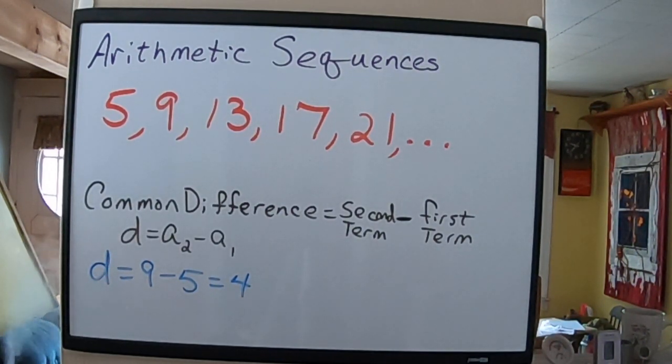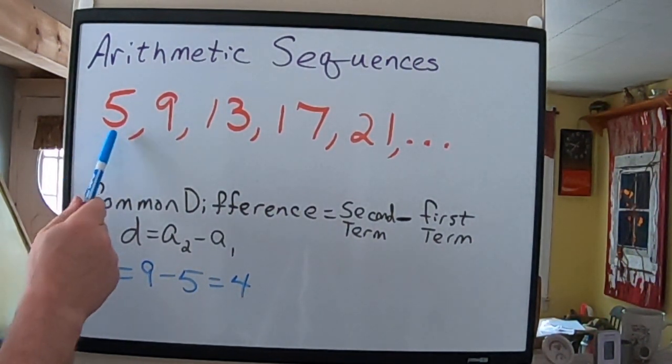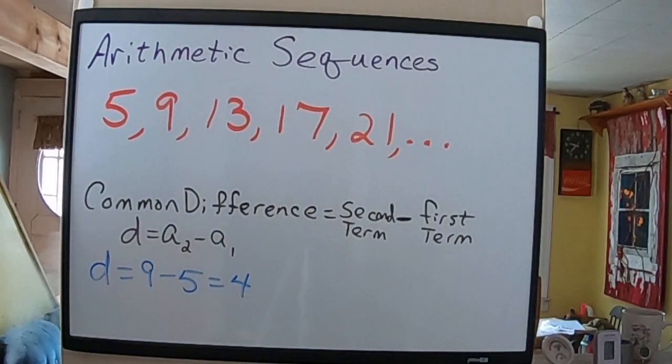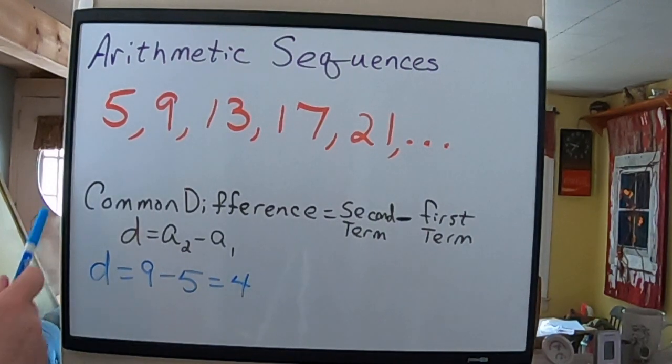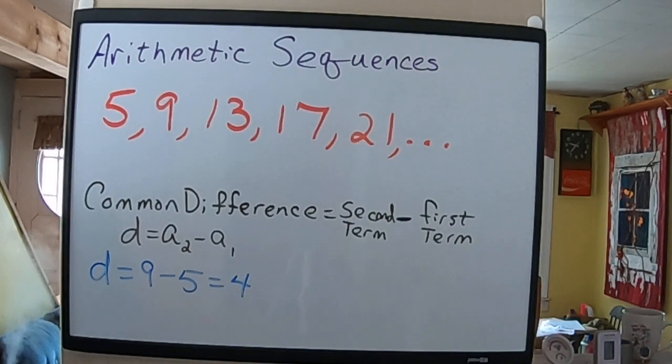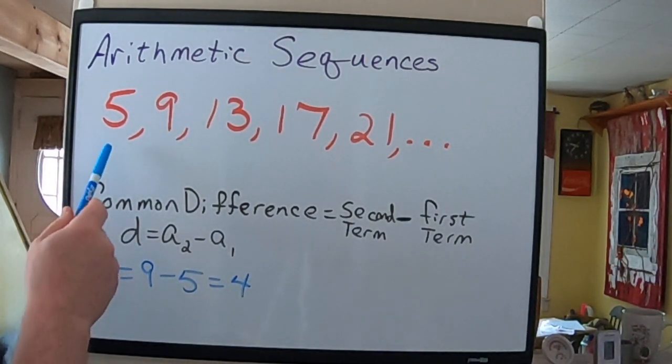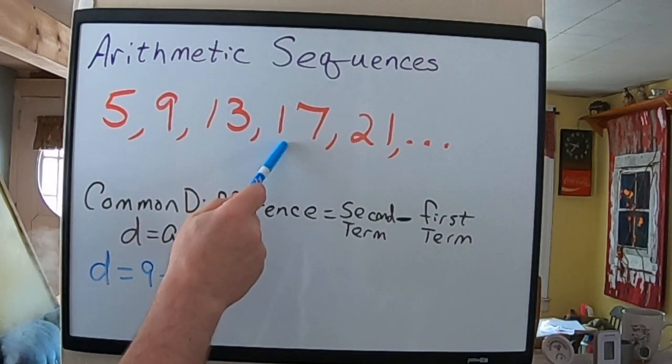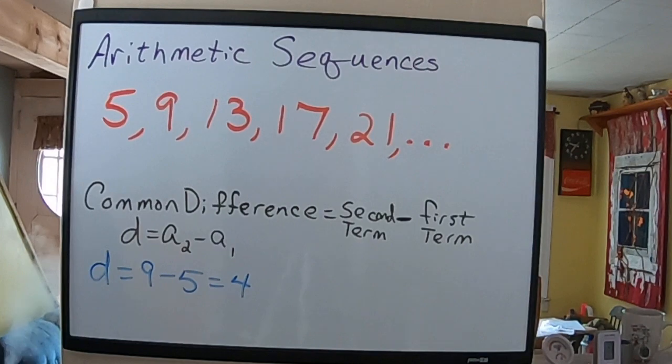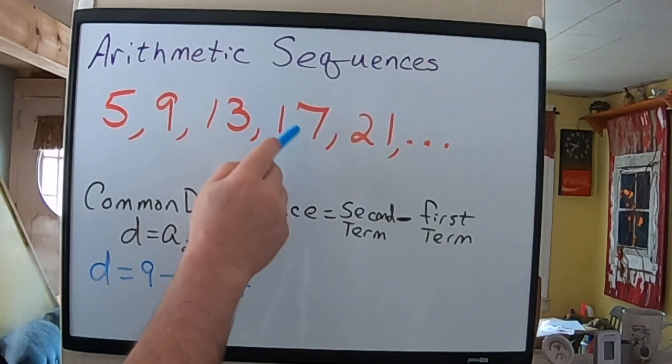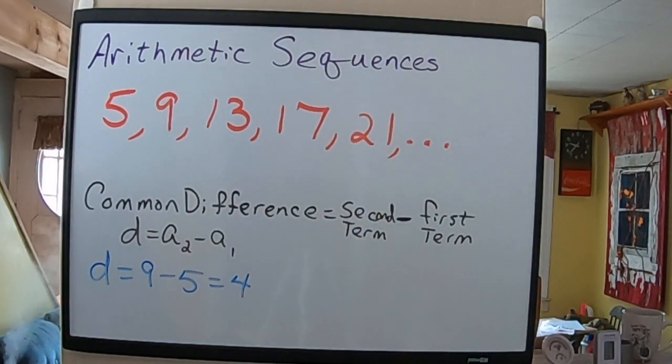Now, in this particular sequence, 5, 9, 13, 17, 21, you'll notice that they are continually going up. A sequence could continually go down instead, and it goes up by the same amount every single time. In this case, it goes up 4, and then another 4.